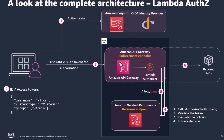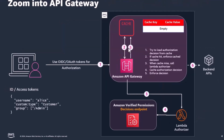To understand how that works, we need to zoom into Amazon API Gateway and take a look underneath. So this is what I've done on this slide — I've expanded into the Amazon API Gateway. The application still presents the JWT tokens to Amazon API Gateway. Now internally, we see that Amazon API Gateway refers to a cache to load the decision.